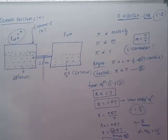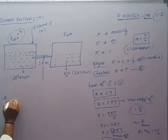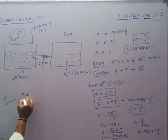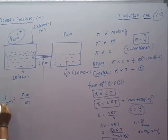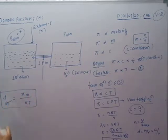Here D is the density. Rearranging to calculate the density of the solution: density D equals pi M by RT. So by using osmotic pressure, we can also calculate the density of the solution.